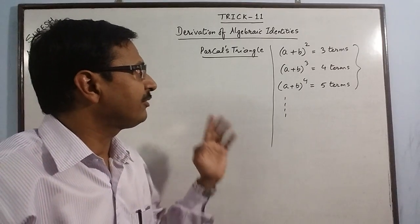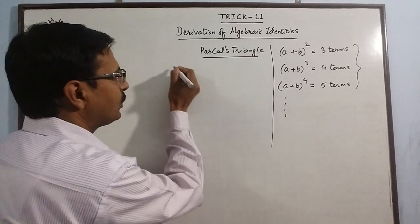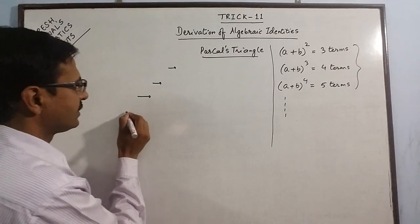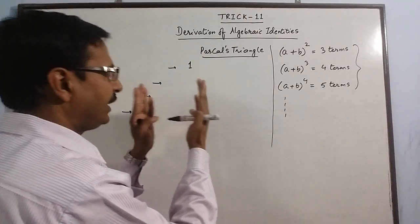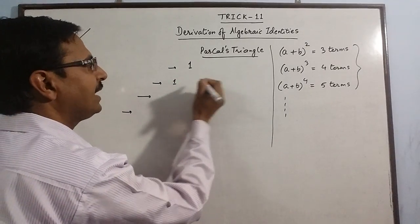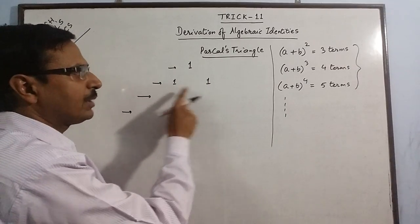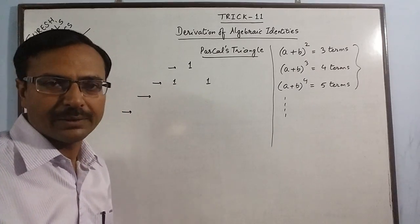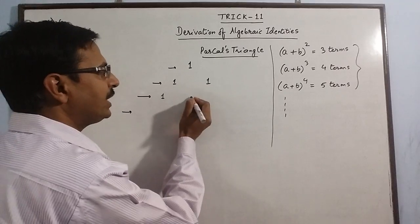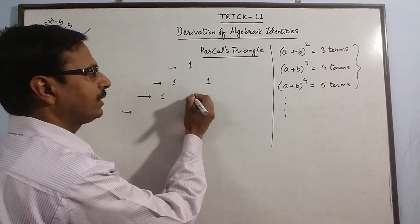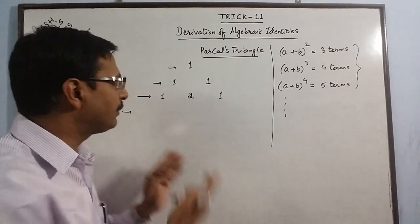From class 8th onwards, if Pascal's triangle is taught, I think it will solve a lot of problems. What is Pascal's triangle? We have to draw rows, and in these rows we start with 1 and keep on increasing by 1 number in each row. The first and the last will always be 1. The first row has 1 number, so it is just 1. The second row has 2 numbers, so it is 1 and 1. Now the third row will contain 3 numbers. We start with 1, and in between we take the sum of the two numbers above. 1 plus 1 gives us 2, and we end with 1.